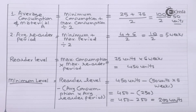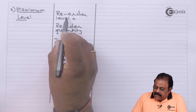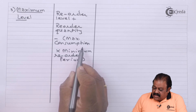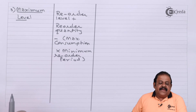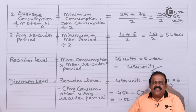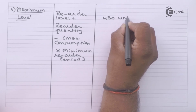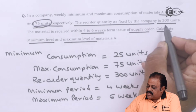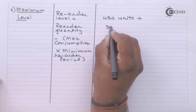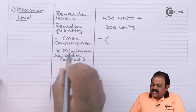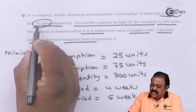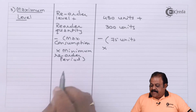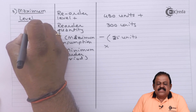For maximum level of stock, the formula is: reorder level plus reorder quantity minus (minimum consumption multiplied by minimum reorder period). Reorder level is 450 units, reorder quantity is 300 units, minimum consumption is 25 units, and minimum reorder period is four weeks.